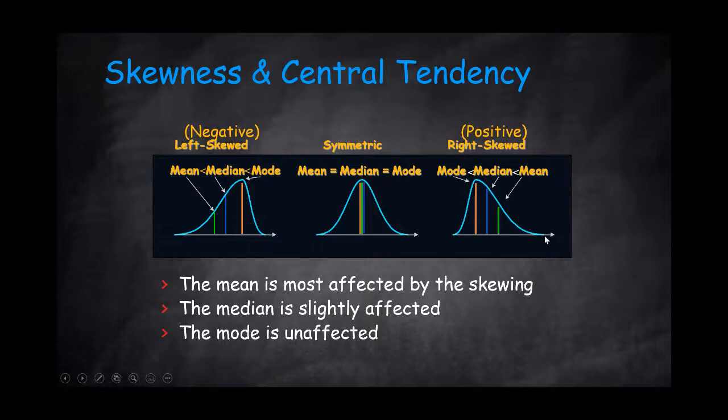The reason we're getting those relationships is because the mean is most affected by skewing. So when we have a tail with extreme values, it will pull the mean, either to the right or to the left, depending on the skewness of the distribution.